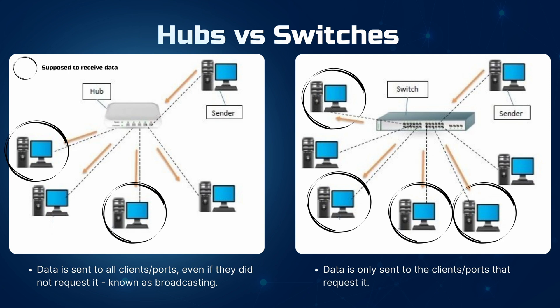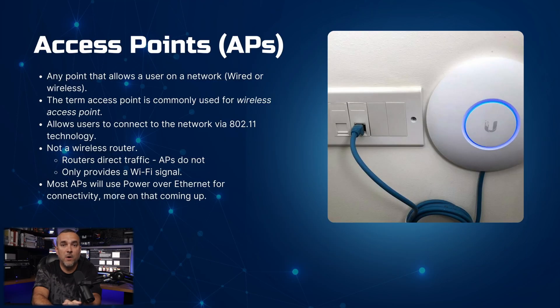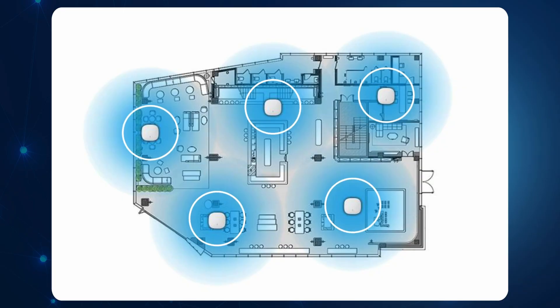An access point enables users to connect to the network using 802.11 technology. It is important to note that an access point is not a wireless router — unlike routers that manage network traffic, access points solely provide a wireless signal. In most cases, access points utilize Power over Ethernet for connectivity. Multiple access points can be strategically placed throughout a building to ensure continuous signal coverage, eliminate dead zones, balance network load, and prevent overcrowding on a single access point, leading to better overall performance.